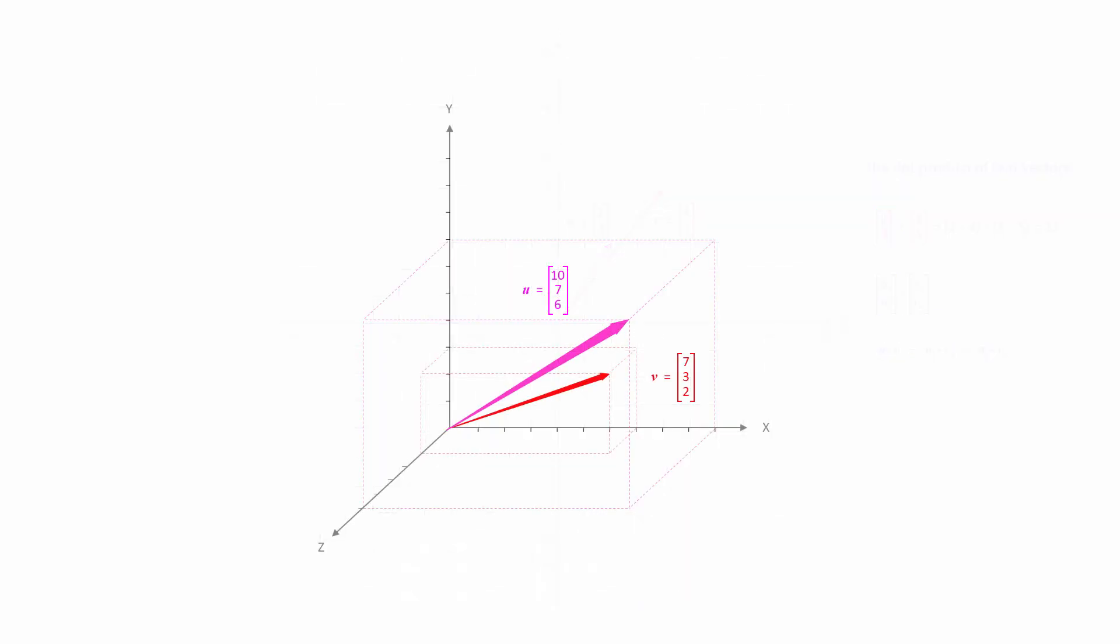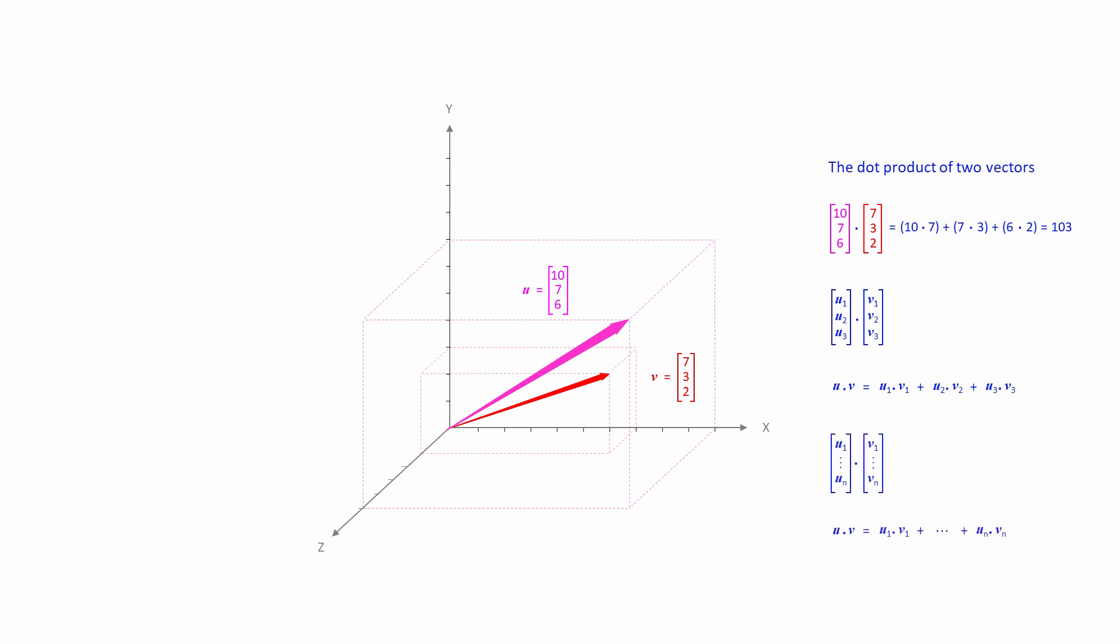The very same principle applies to three-dimensional vectors as well. The dot product is still just the sum of the products of corresponding components. These two vectors have a dot product of 103. Algebraically, we can say this. Indeed, the same principle applies in any number of dimensions.